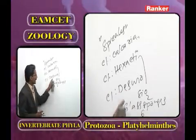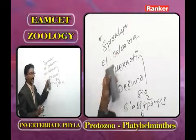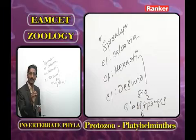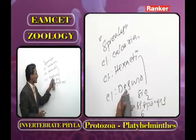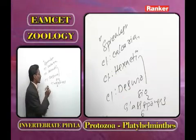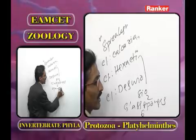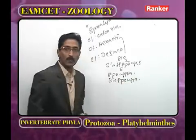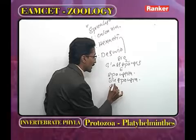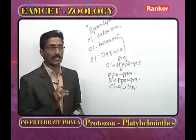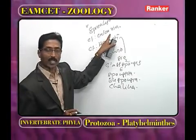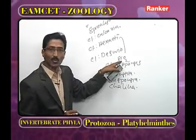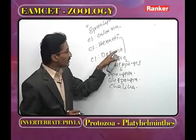In Demospongiae, both freshwater and marine sponges are present. Example Spongilla is a freshwater sponge; Euspongia is known as bath sponges; Chalina is called dead man's finger. In Demospongiae, spicules are made by either SiO₂, spongine fibers, both, or spicules may be totally absent.